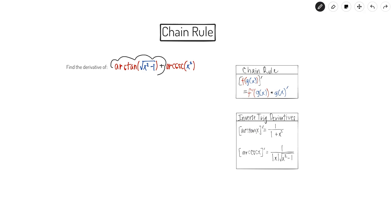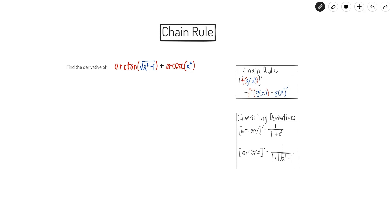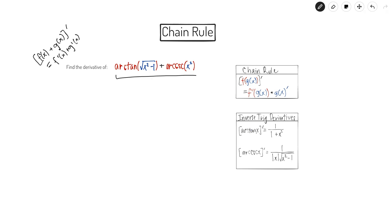Just focusing on one part of this expression: I have arctangent of the square root of x squared minus one, and I can look at this as the square root of x squared minus one inside of arctangent — a function composed inside of another function, which is a candidate for the chain rule. The same logic applies to the other term. We know that the derivative of two functions added together is just the sum of their independent derivatives, so I'm going to take the derivative of the first part and then add it to the derivative of the second part.